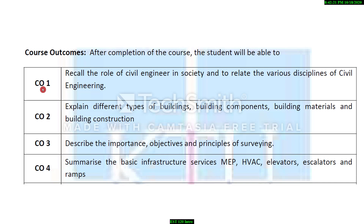There are mainly four course outcomes. Course outcome one is to recall the role of civil engineers in society and to relate the various disciplines of civil engineering. By studying this course, students will know what work civil engineers do in society and what the subdivisions of civil engineering are.